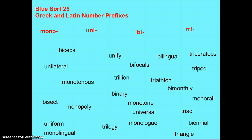To start with this week, we're going to sort our words into the correct categories. You'll notice that we have prefixes mono, uni, bi, and tri that start off the word. A reminder that a prefix is a unit added to the beginning of a word. Let's sort our words.